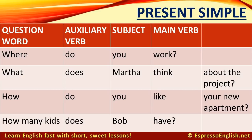Let's see how it works in the present simple. Where do you work? The question word is 'where,' the auxiliary verb is 'do,' the subject is 'you,' and the main verb is 'work.' Here are three more examples: What does Martha think about the project? How do you like your new apartment? How many kids does Bob have?